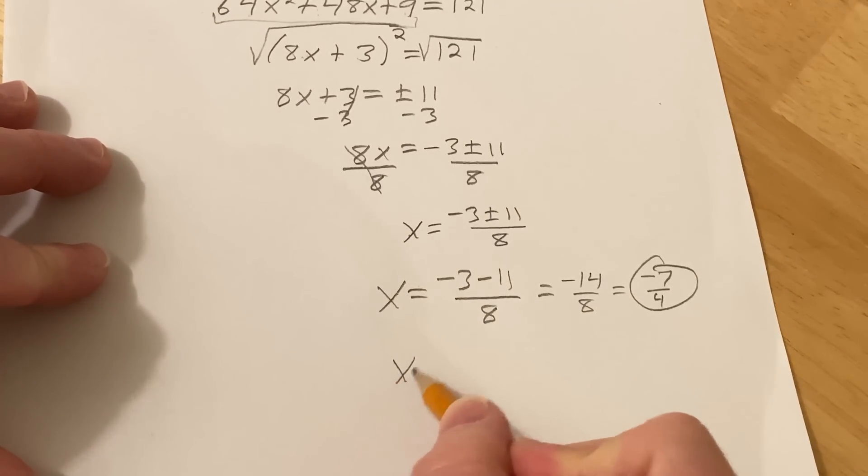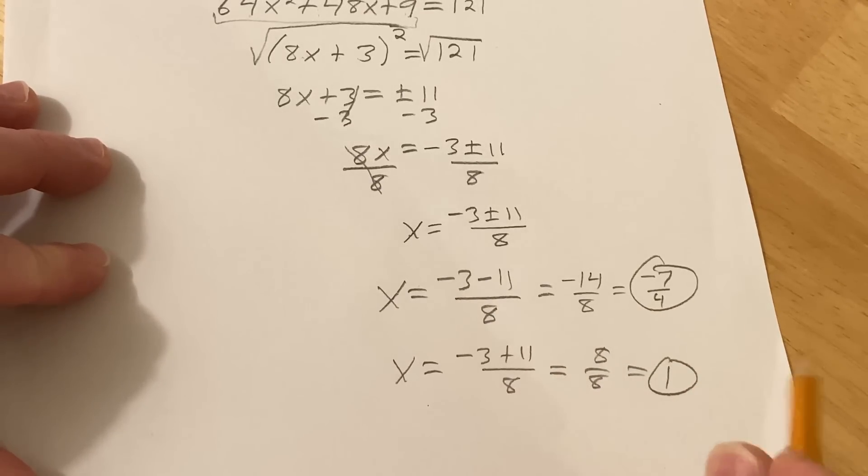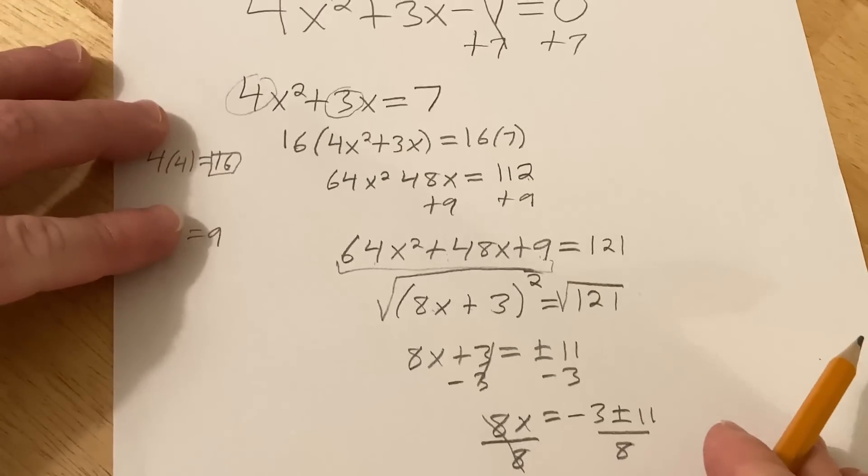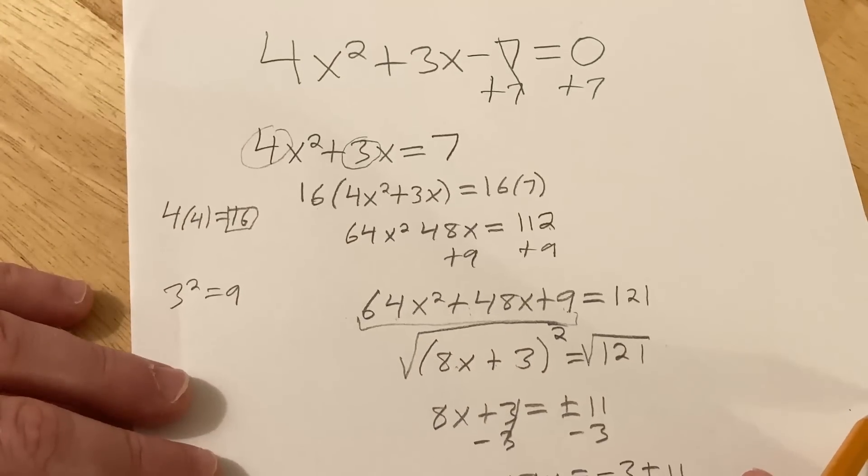And then the other one will be the plus case. So negative 3 plus 11 over 8. So this is going to be 8 over 8, which is 1. So those are the answers to this quadratic equation using this new method of completing the square.